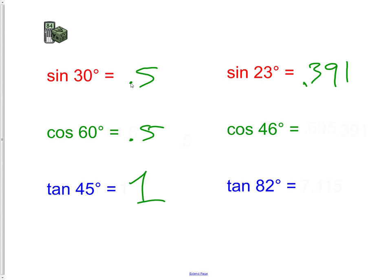Next, cosine of 46, we have 0.6946, which would round to 0.695. And lastly, we have tangent of 82, which is 7.1153, which rounds simply to 7.115. We need to know how to run our calculators for our next steps.